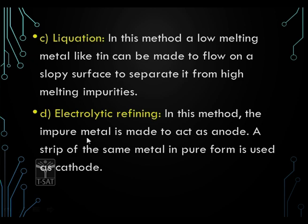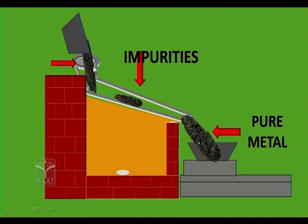In electrolytic refining, the impure metal is made to act as anode and a strip of the same metal in pure form is used as cathode. Whatever metal is present in the electrolyte gets deposited on the cathode, giving you pure metal deposited on the cathode. In liquation, impurities with high melting point get separated and the pure metal with lower melting point collects in molten state; impurities settle back while pure metal is collected in the container.